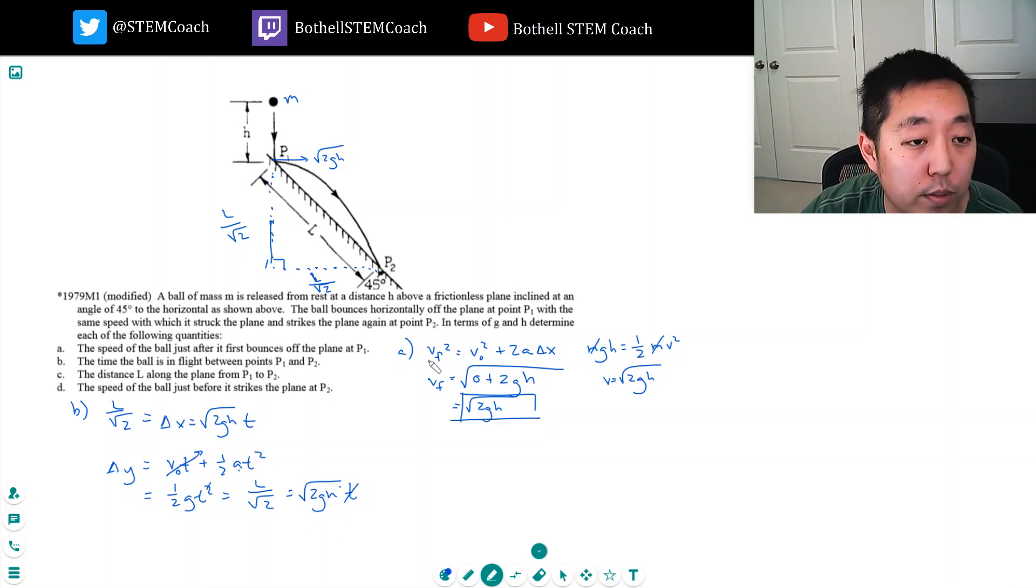Assuming time isn't zero. Now it's true that they're equal at time equals zero, but assuming t doesn't equal zero, I can divide by t.